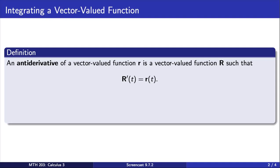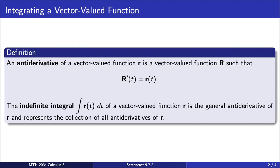An antiderivative of a vector-valued function, little r, is a vector-valued function, capital R, such that if we take the derivative of capital R, we get little r. The indefinite integral of a vector-valued function r is the general antiderivative of r and represents the collection of all the antiderivatives of r.